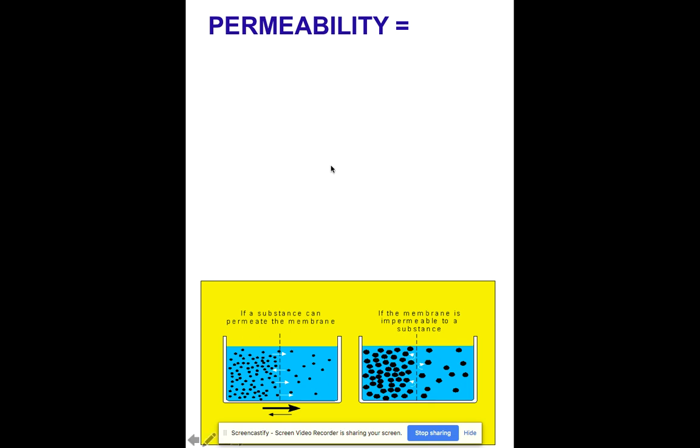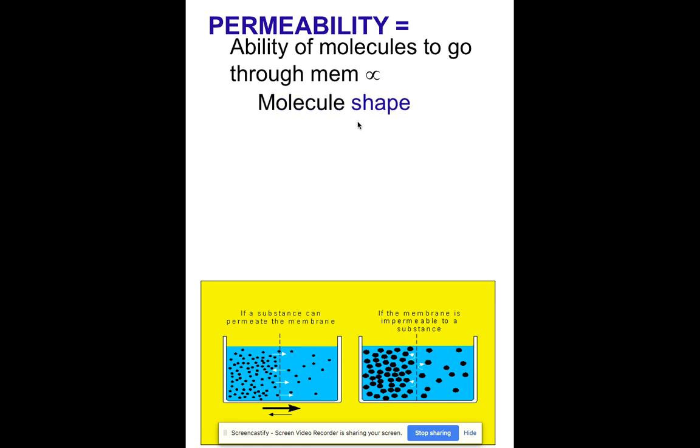So, permeability is this ability for some things to go through a membrane. So, it's the ability of molecules to go through the membrane. And this weird little symbol means according to. So, the ability of molecules to go through a membrane according to something. So, membranes, like your cell membrane, only let some things through. You can't let everything through or else we would probably not be doing so hot. So, what causes the cell membrane to block certain things yet let others through? First thing is a molecule shape. Some molecules just aren't shaped correctly or they're too big. It's just not going to let them through.